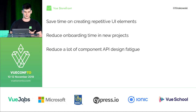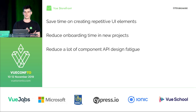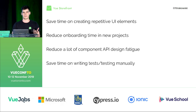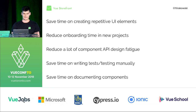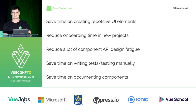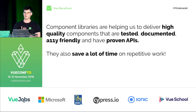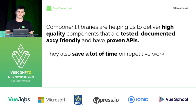With component libraries we also reduce a lot of component API design fatigue. Whenever we create a component, we need to think about the API for it, and the first idea might not be the best one. If we have a component library with a proven API, we don't need to think about this. We can also test it once and forget about it, which is great for code quality and saves time. The same applies to documentation — usually in a project you don't have time to document every UI component, but a shared library gives you nice documentation. Generally, component libraries help us deliver high-quality components that are tested, documented, accessibility-friendly, and have proven APIs.